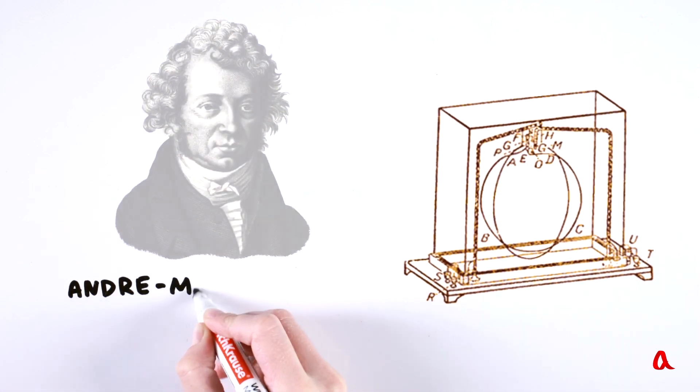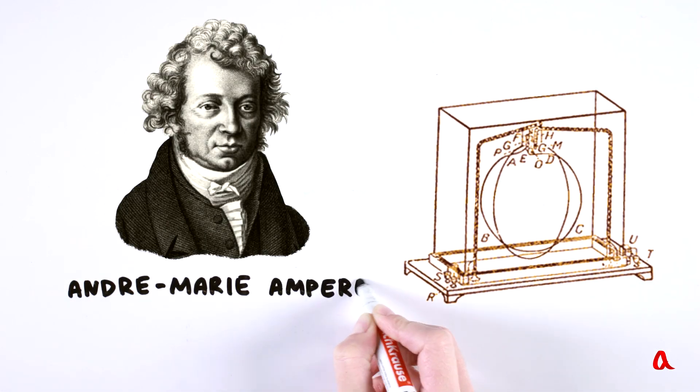This reverse effect of a magnetic field on an electric current was studied by French physicist André-Marie Ampère. To see how this effect occurs, let's make an experiment.